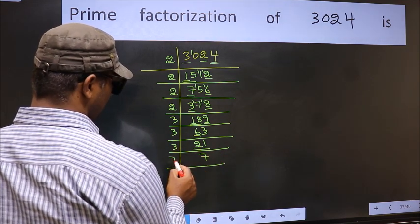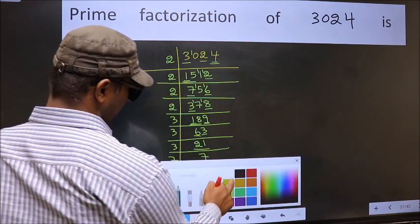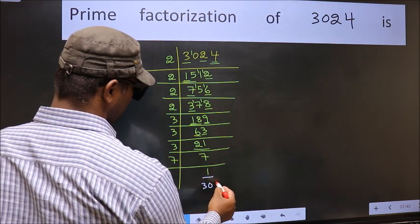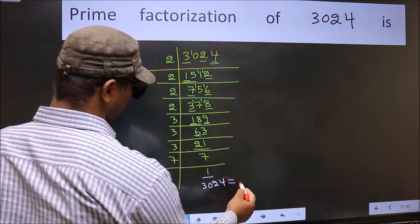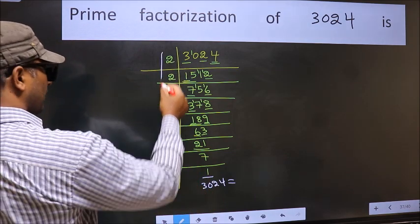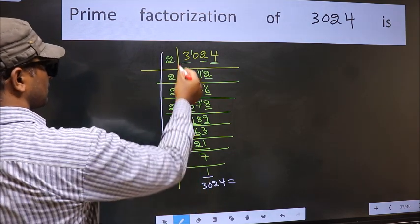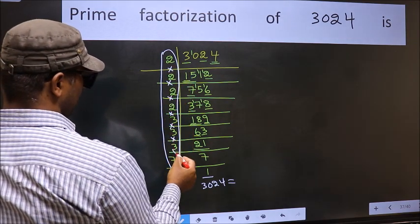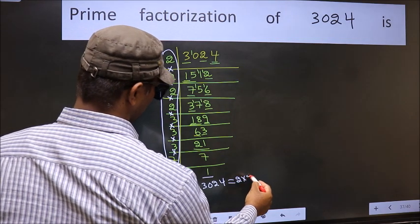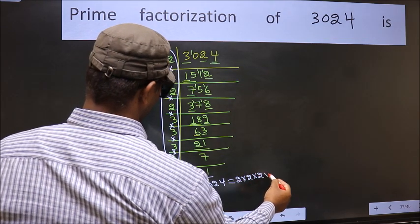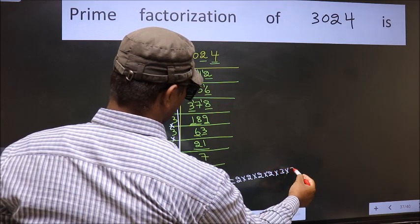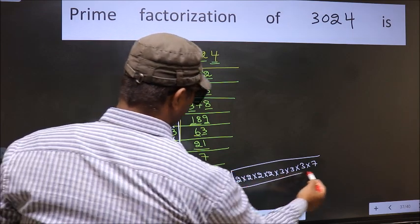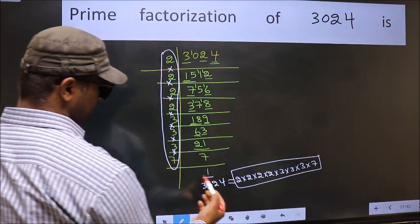Now we have 7. 7 is a prime number, so 7 times 1 is 7. So we got 1 here. So the prime factorization of 3024 is the product of these numbers. That is 2 times 2 times 2 times 2 times 2 times 3 times 3 times 3 times 7. This is the prime factorization of 3024.